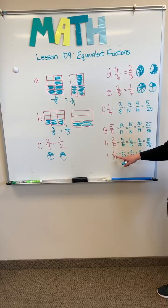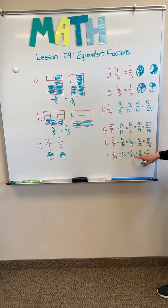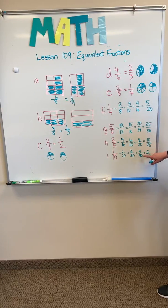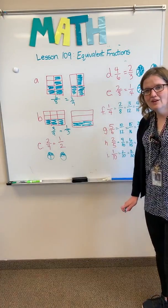And the last one is 1 tenth. We can view it as 2 over 20, 3 over 30, 4 over 40, and 5 over 50. And there you have it, the practice set.